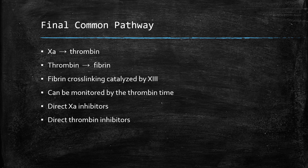Both the extrinsic and intrinsic pathways convert factor X to its activated form. The final common pathway consists of activated factor X activating thrombin. Thrombin is then able to convert fibrinogen to fibrin on the platelet plug. The final step in forming a stable platelet plug is fibrin cross-linking, catalyzed by factor XIII. If necessary, the final common pathway can be monitored by the thrombin time. There are several newer anticoagulants that directly inhibit the final common pathway — direct factor X inhibitors and direct thrombin inhibitors — which we'll discuss more in the next video.